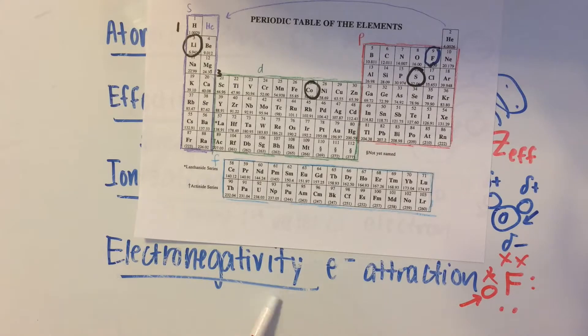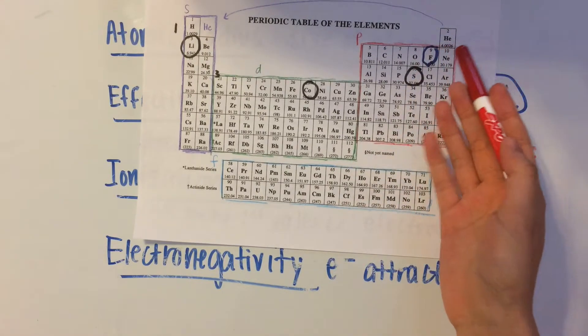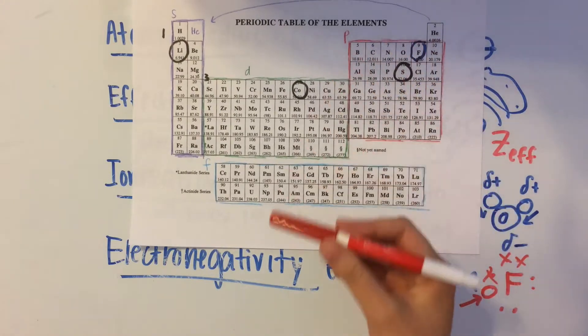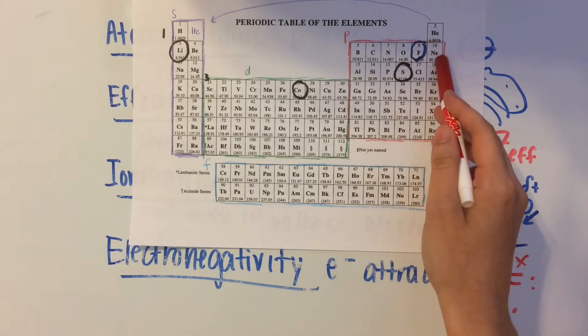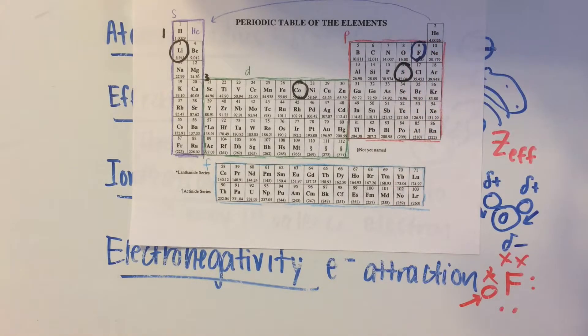And last thing is electronegativity. So fluorine is extremely electronegative because it really wants that last electron to complete its valence shell just so it can be like a noble gas and become more stable.